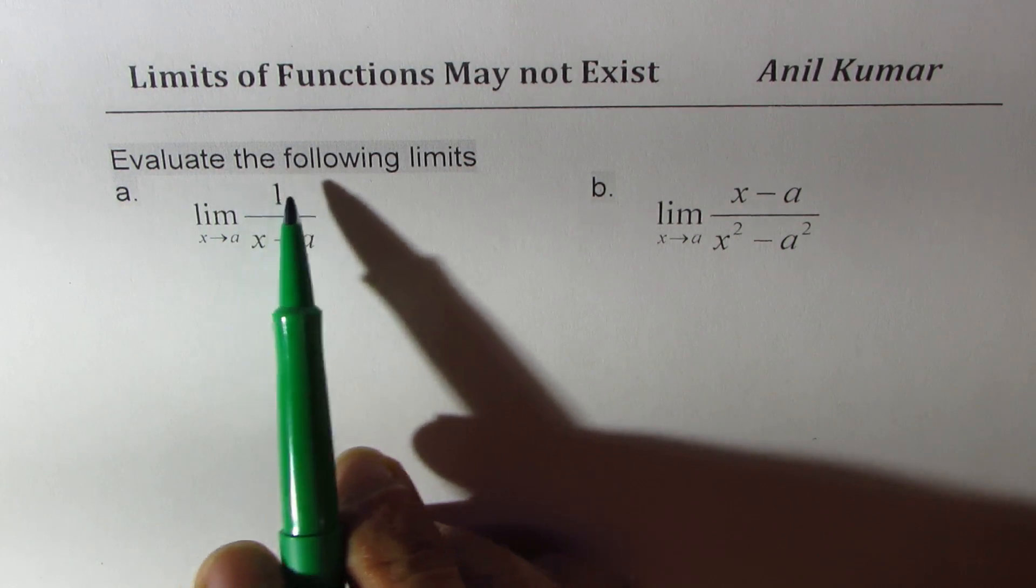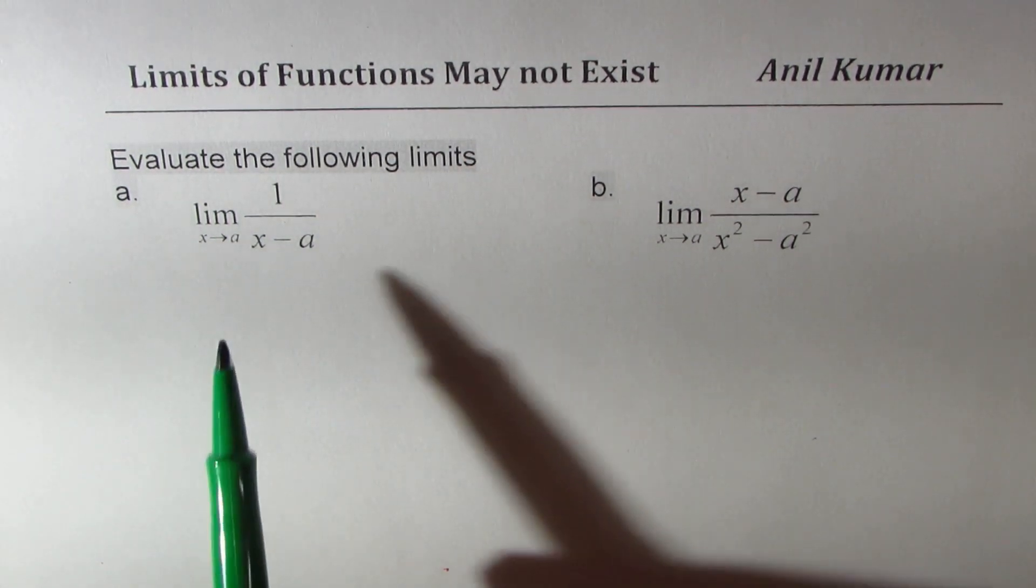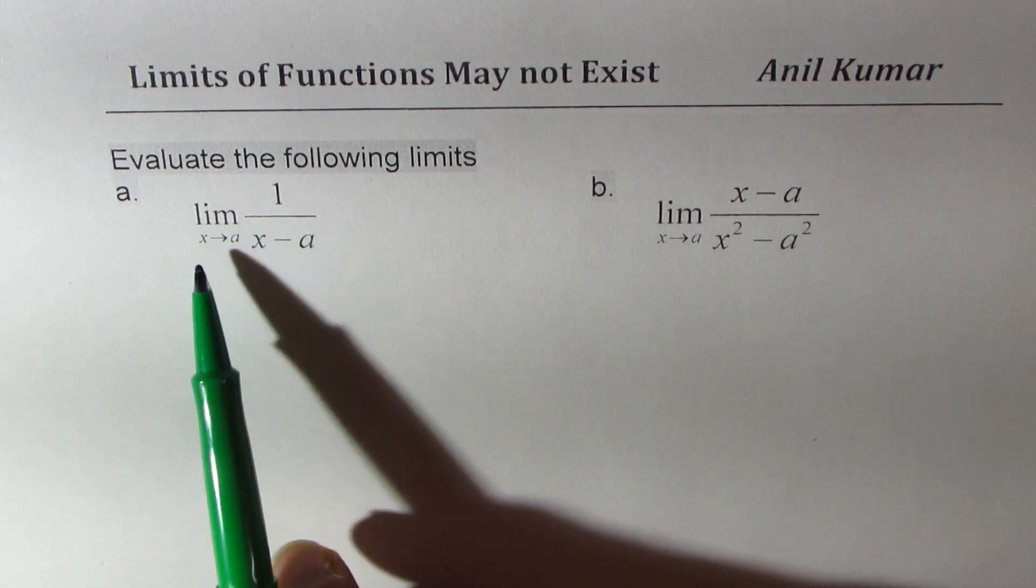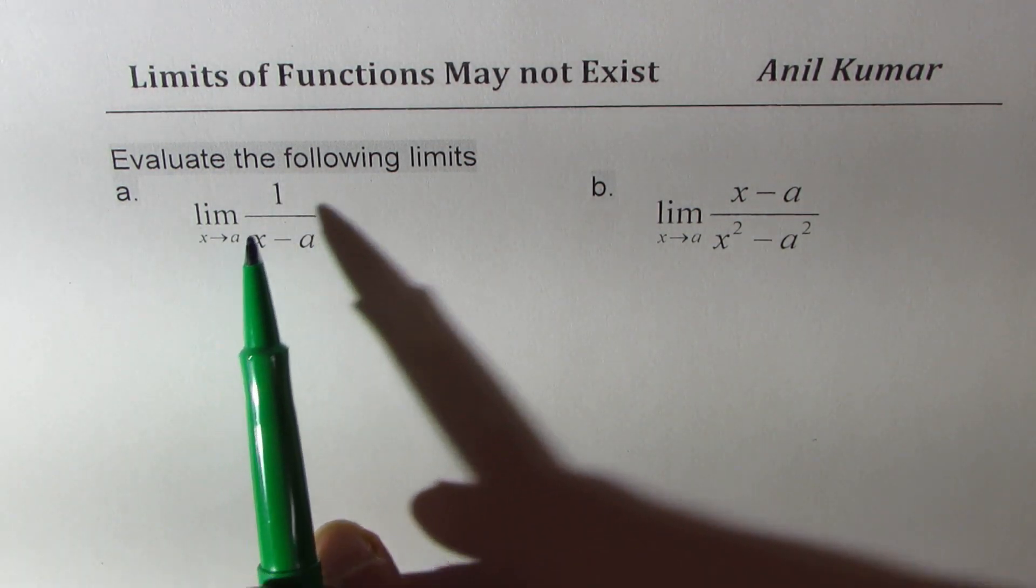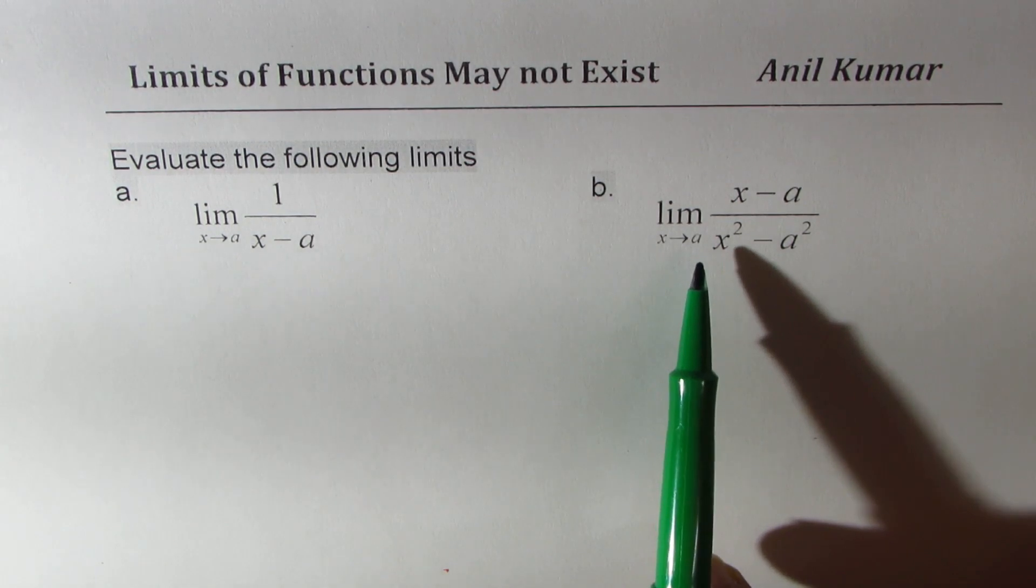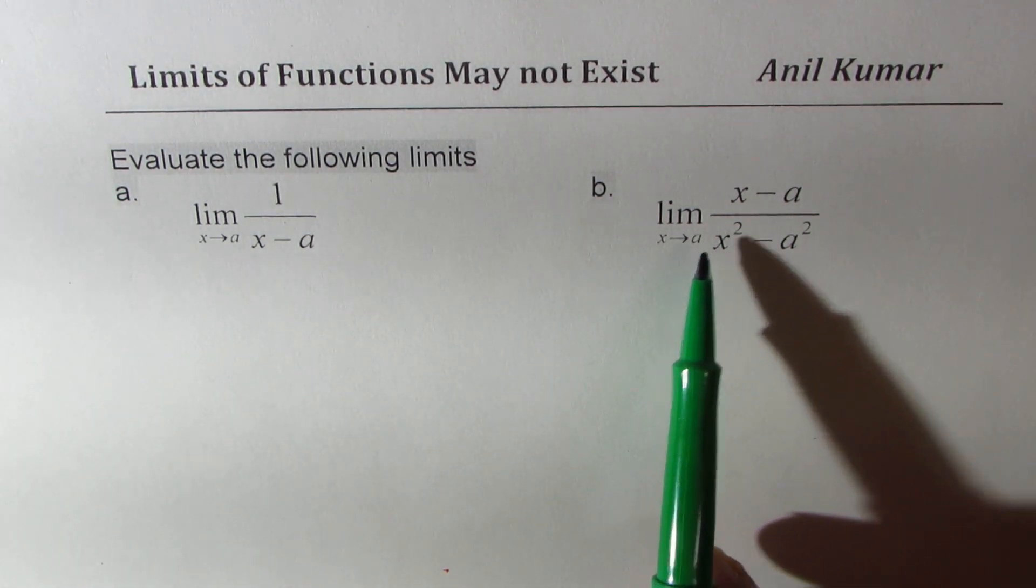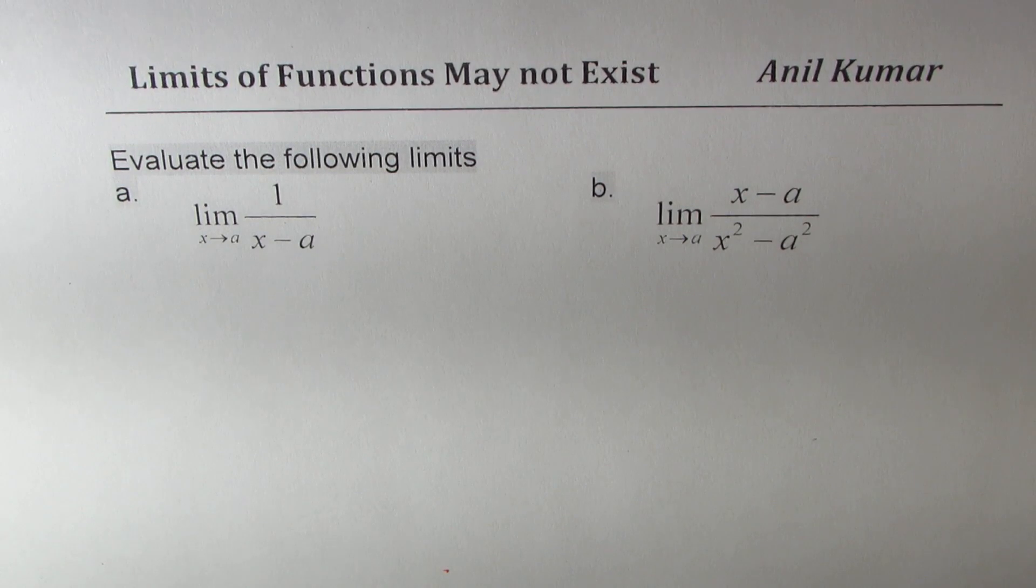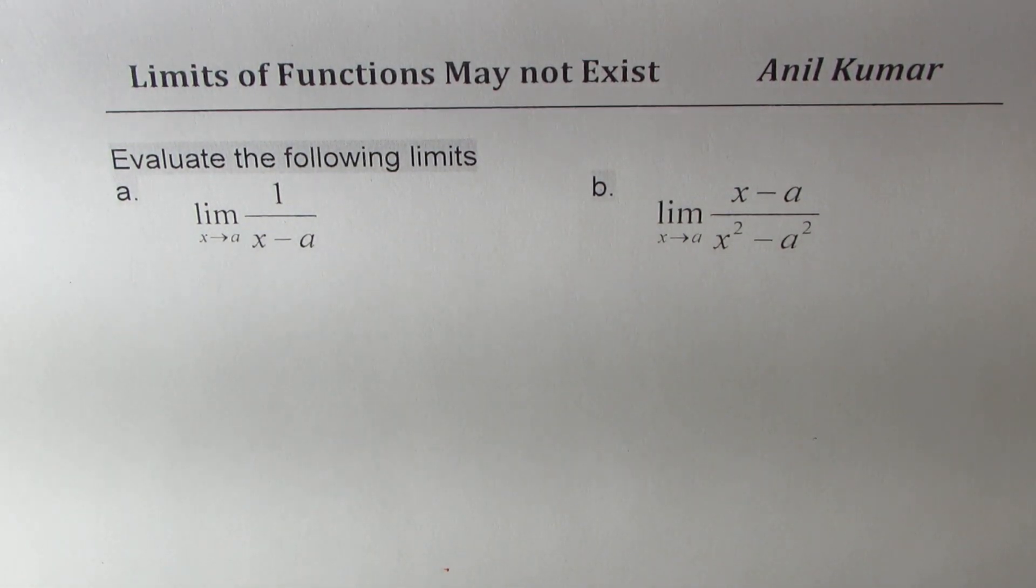We need to evaluate limit of following functions. The first one here is limit when x approaches a for 1 over x minus a. And the second one is limit when x approaches a for x minus a divided by x squared minus a squared.